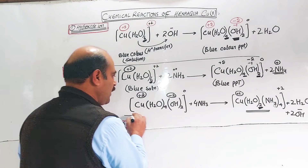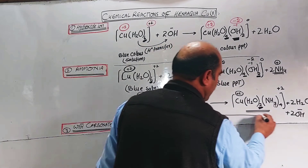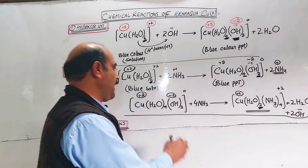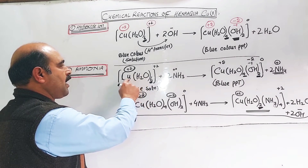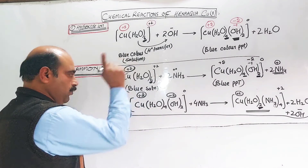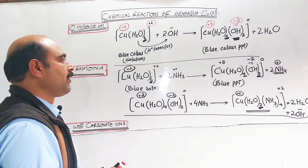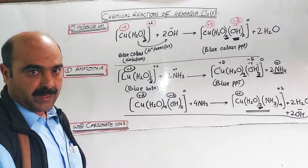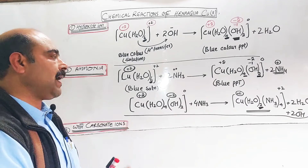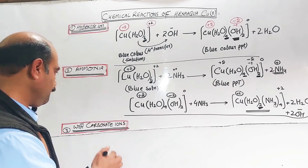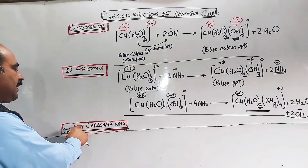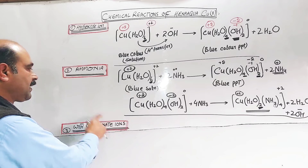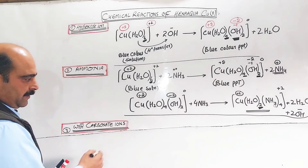This was the chemical reaction of hexa aqua copper two with ammonia. Students, the last reaction: chemical reaction of complex ions of copper with carbonate ions.